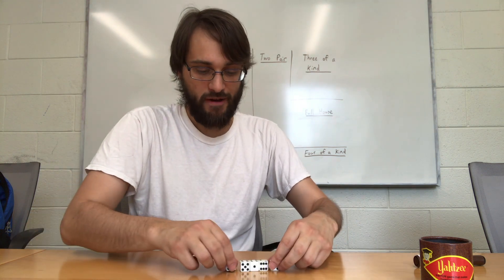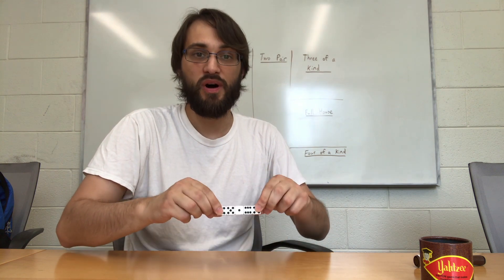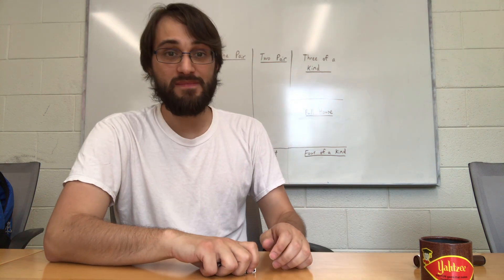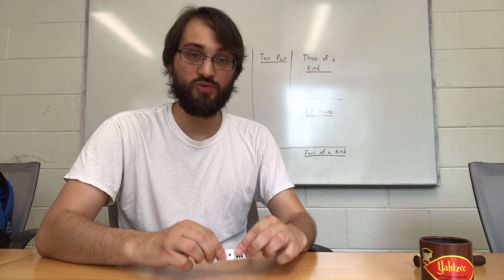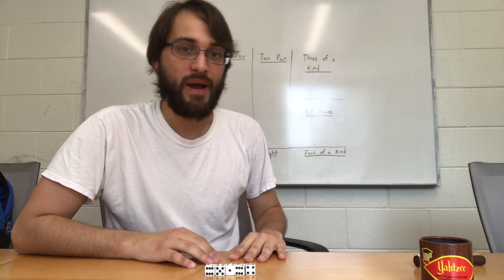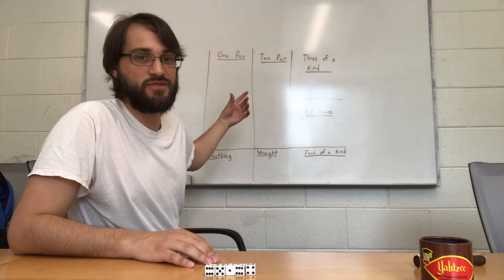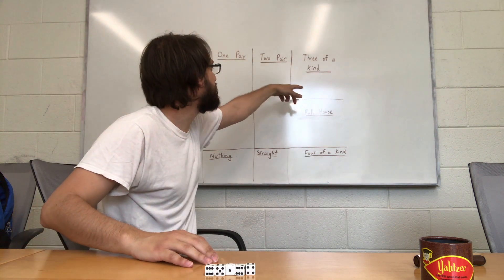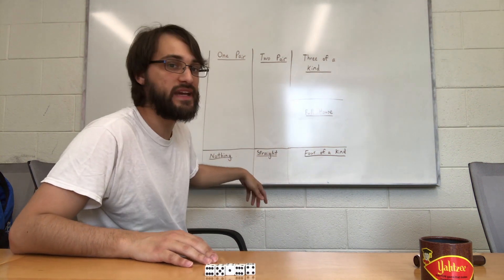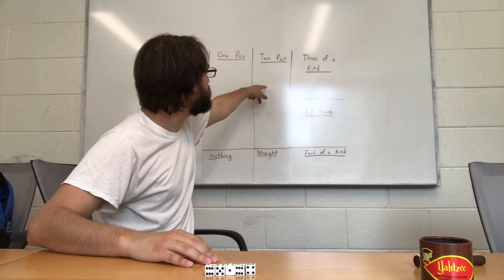The odds of this happening are approximately 1 in 1296, so I'm going to just keep track of how many times it takes me to roll a Yahtzee in one roll. And while I'm doing that, I'm going to just for fun keep track of how many types of each different kind of roll I get. So I have one pair, two pair, three of a kind, full house, four of a kind, straight, and if I get nothing.